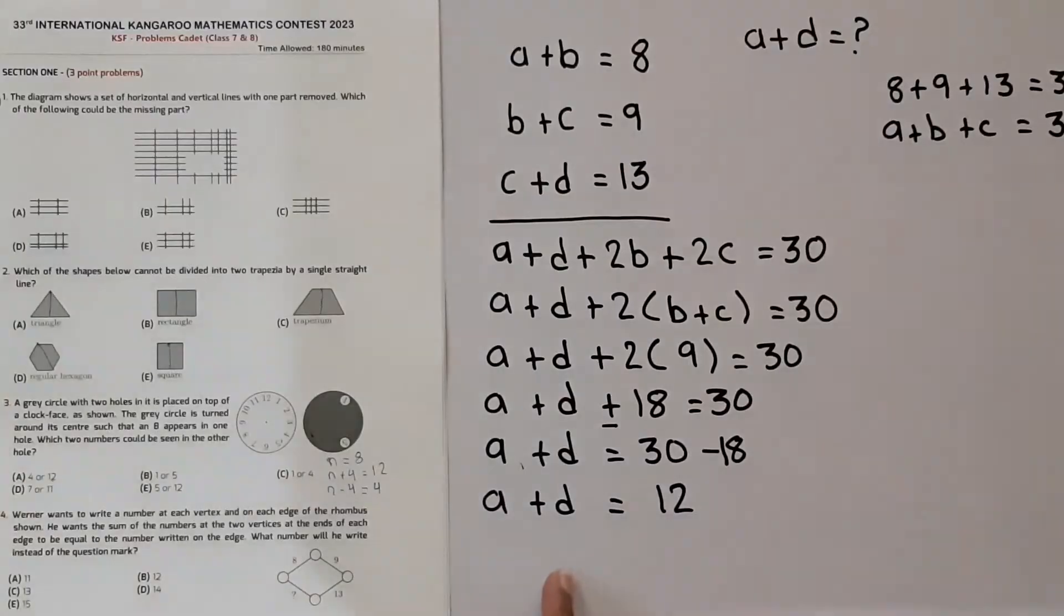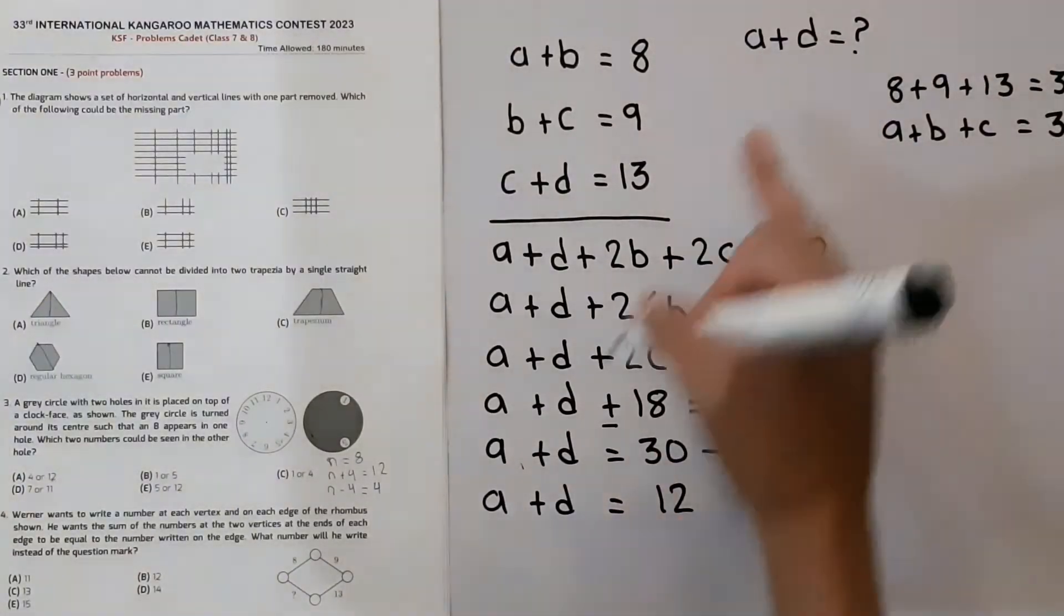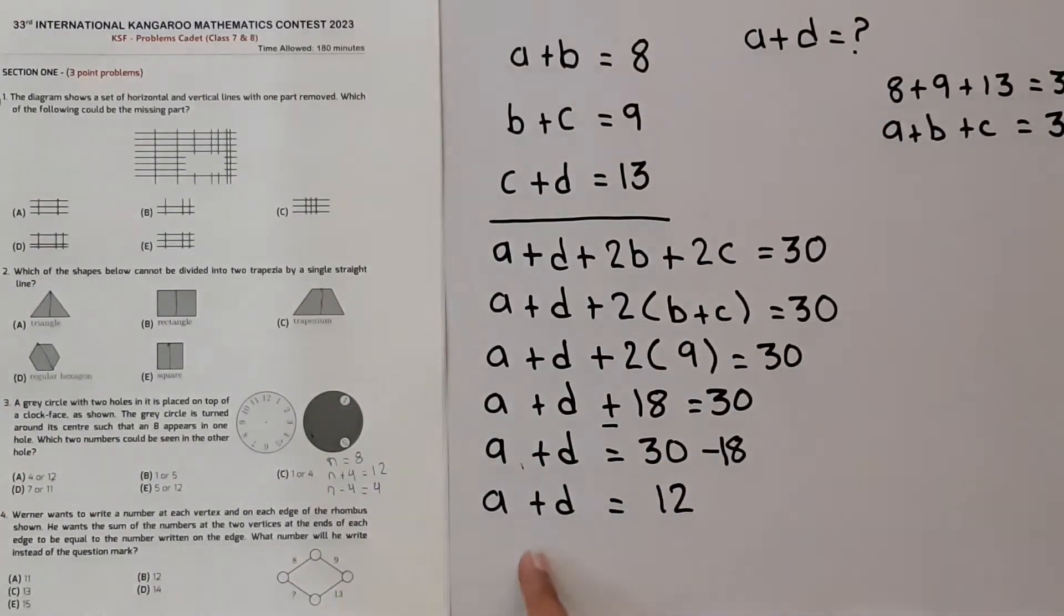So we wanted to find A plus D and we have found out A plus D is equal to 12. So we know that the value of A plus D is equal to 12. And 12 is option B. 12 is our answer. So this question is solved.